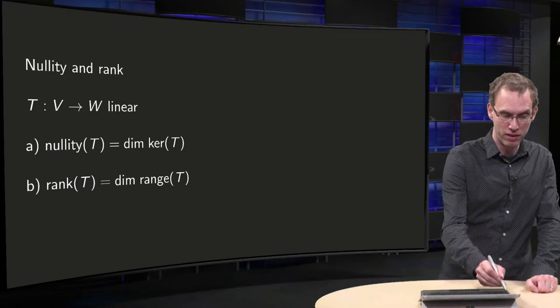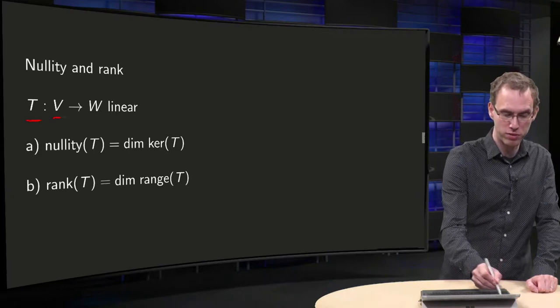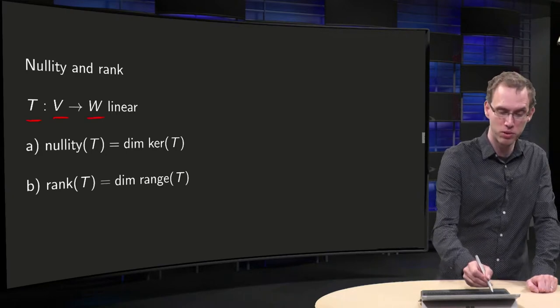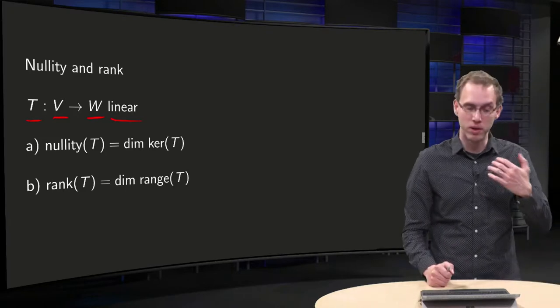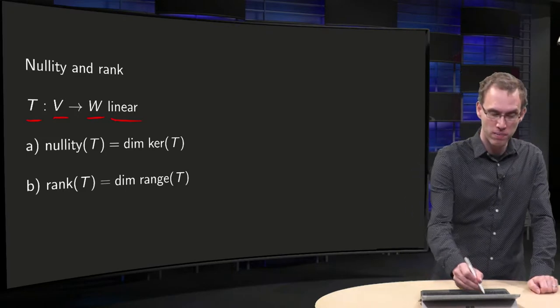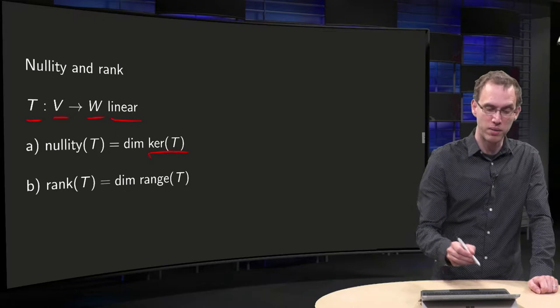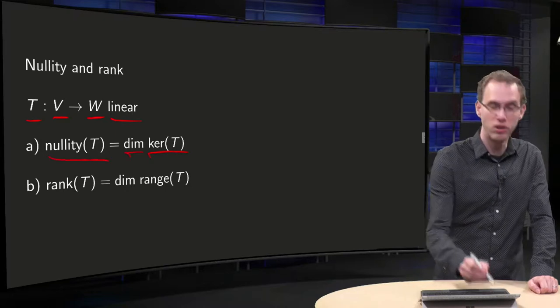So, if you have a transformation T from a vector space V to a vector space W that is linear, then you know that the kernel of T is a subspace and the dimension of the kernel of T is called the nullity of T.